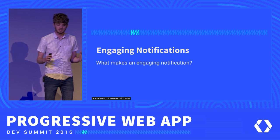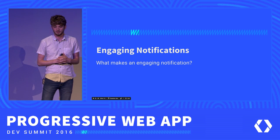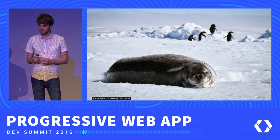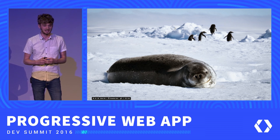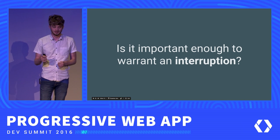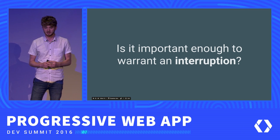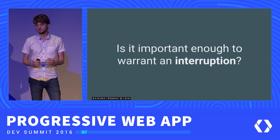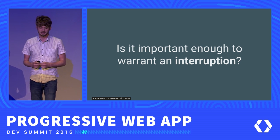Push notifications is this amazing new superpower that we have on the web. But everybody knows that with great power comes great responsibility. So this begs the question: what makes a great, engaging notification? We believe that great notifications are timely, relevant, and precise. For these penguins, a push notification letting them know there's a leopard seal behind them would really change the course of their day. As you're designing your push notification flows, think about whether what you're sending is important enough to warrant an interruption.